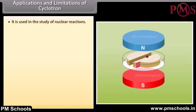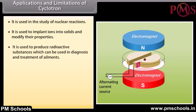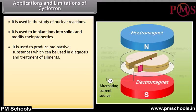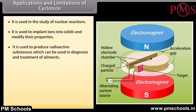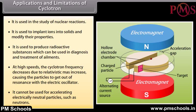Applications and limitations of the cyclotron: It is used in the study of nuclear reactions; to implant ions into solids and modify their properties; and to produce radioactive substances for diagnosis and treatment of ailments. A limitation is that at high speeds the cyclotron frequency decreases due to relativistic mass increase, causing particles to get out of resonance with the electric oscillator. Also, it cannot be used for accelerating electrically neutral particles such as neutrons.